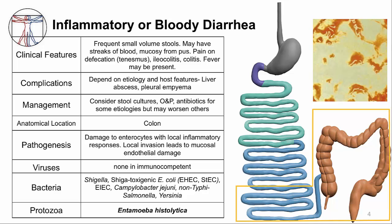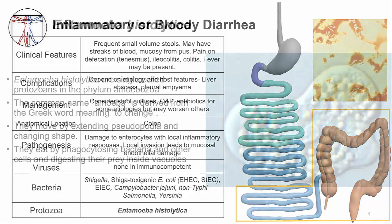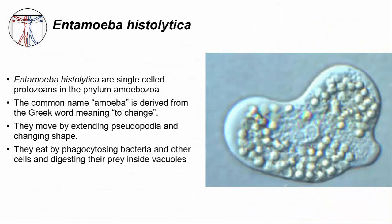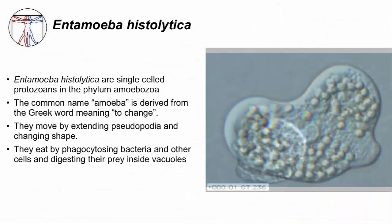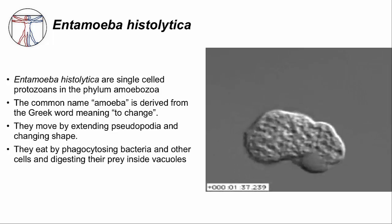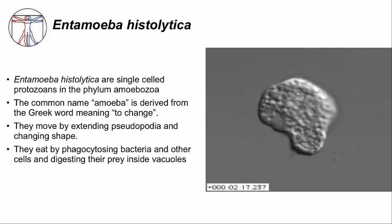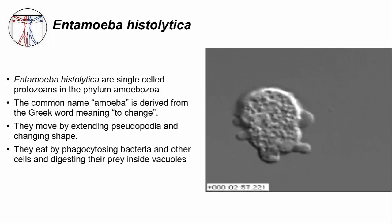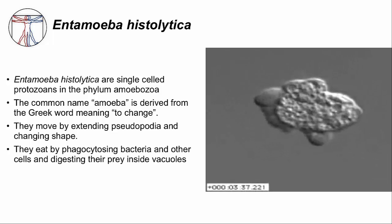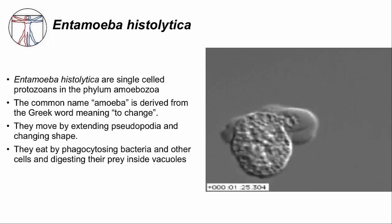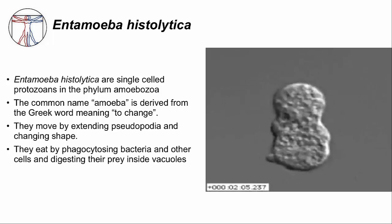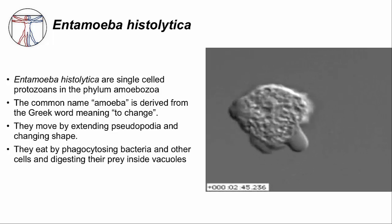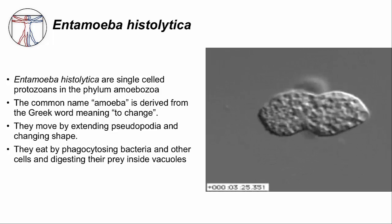Entamoeba histolytica infects the colon, as you can see from the summary table. Entamoeba histolytica are single-celled organisms, and as you can see in the picture, the shape of an entamoeba is not defined. Here's a movie of entamoeba crawling around. The name comes from the Greek word meaning to change. They move by extending pseudopodia, and you can see small vacuoles inside. They use these for digesting their prey, which are usually bacteria in the colon, but they can also eat you.